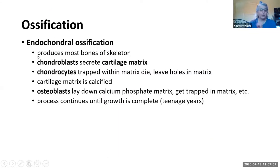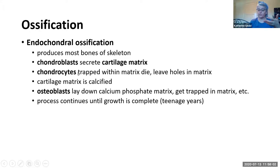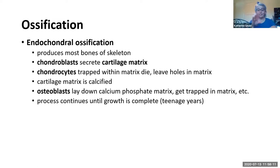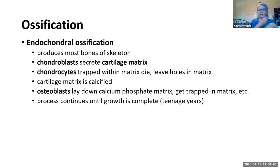Endochondral ossification requires first that chondroblasts secrete the cartilage matrix and become chondrocytes. Just like osteoblasts get trapped, the chondroblasts get trapped. They die inside those little lacunae and leave holes in the matrix. Then the cartilage matrix becomes ossified by osteoblasts laying down osteoid, and then that gets calcified and we have bone.